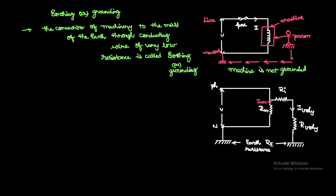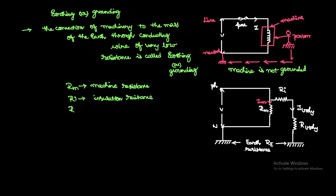If you observe this entire circuit diagram, the machine has some windings, and if a person touches this winding, we can convert this into an electrical equivalent. The terminology used: RM is the machine resistance, RI is the insulation resistance, RB is the body resistance of the person touching the machine.